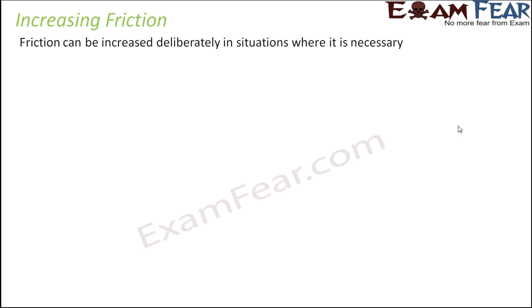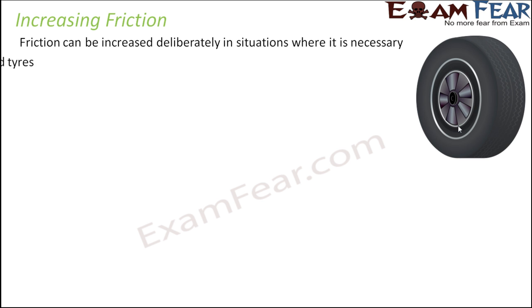If you have a smooth surface and you want to increase the friction, just make the surface rough by adding something rough in nature. For example, treaded tires. If you look at the structure of the tires very closely, you will see that the surface of the tires has some designs or patterns that make the surface of the tire really uneven or rough. This rough surface of the tire helps it to move well on the road, since the road is also rough, so the chances of slipping are less. Therefore, the vehicle can move in a better way with treaded tires.